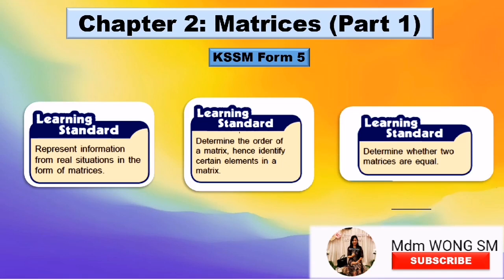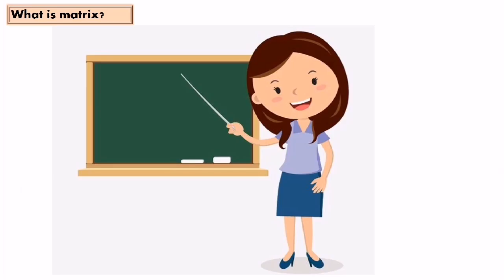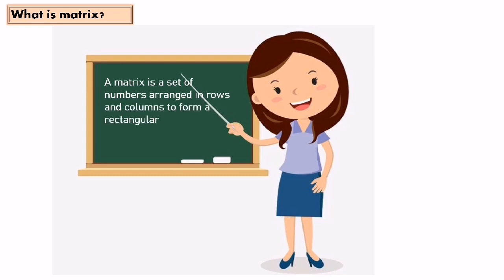Chapter 2: Matrices, Part 1. In this video, I'm going to discuss how to represent information from a real situation in the form of matrices, determine the order of a matrix, and identify certain elements in a matrix. A matrix is a set of numbers arranged in rows and columns to form a rectangular or square array.